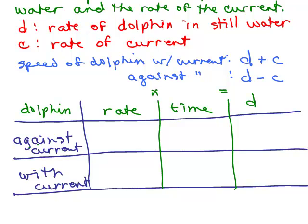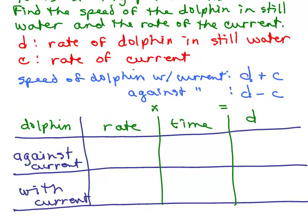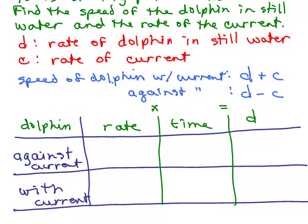So we're going to use our formula that rate times time equals distance and we're talking about how fast the dolphin is going against the current and with the current. So the dolphin's rate against the current, well, if we look up here, let's see, what did I write?